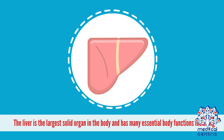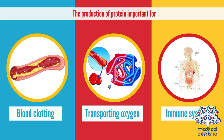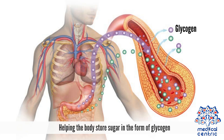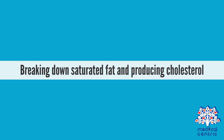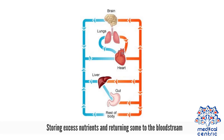The liver is the largest solid organ in the body and has many essential functions, including the production of protein important for blood clotting, transporting oxygen, and helping the immune system, helping the body store sugar in the form of glycogen, breaking down saturated fat and producing cholesterol, getting rid of harmful substances in the bloodstream including drugs and alcohol, and storing excess nutrients and returning some to the bloodstream.